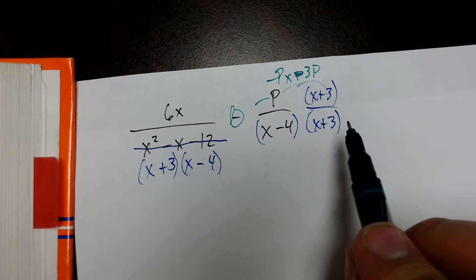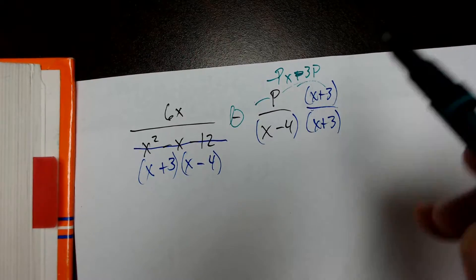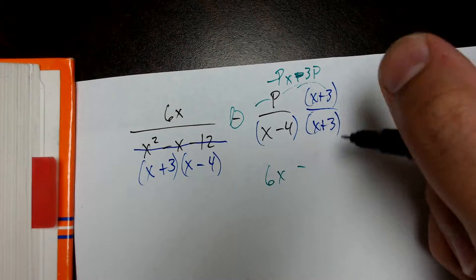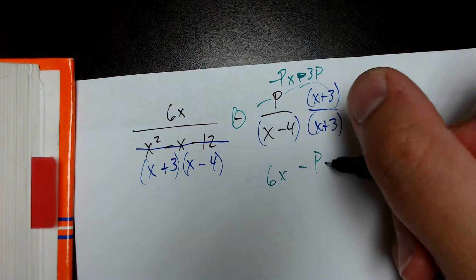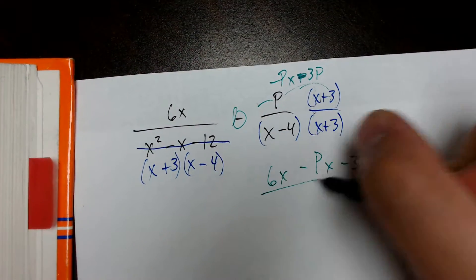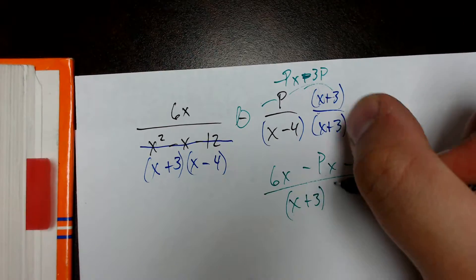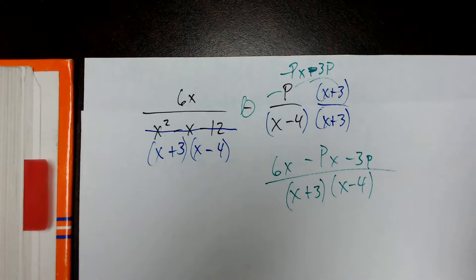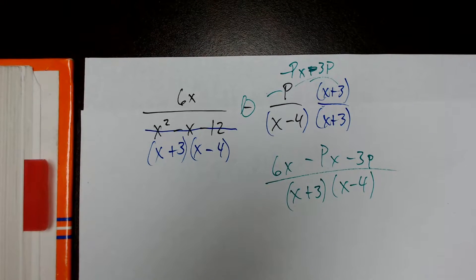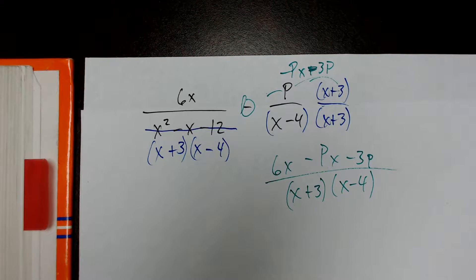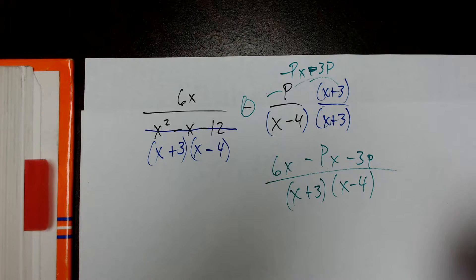Okay, so our numerator now that we've got the common denominator is going to be 6x minus px minus 3p. And then the common denominator is (x + 3)(x - 4). And I've successfully added the two numbers.